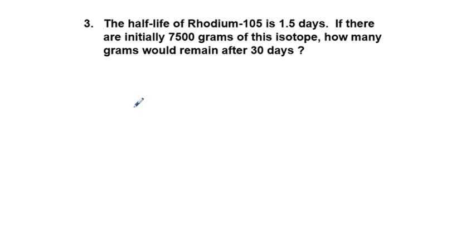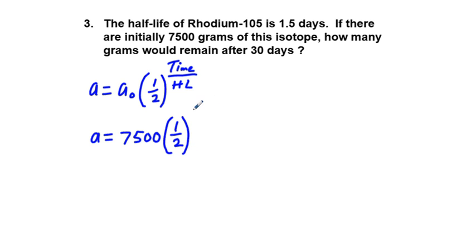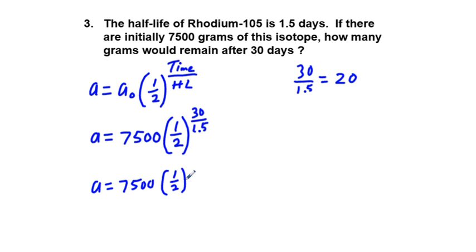Same equation. We have A equals A sub-zero times our base, one-half, to the power of time over our half-life. In this instance, we would have A is equal to our initial value, which is 7,500, times one-half, to the power of our time of 30 days over our half-life of 1.5 days. Since 30 divided by 1.5 is equal to 20, A is going to be equal to 7,500 times one-half to the power of 20. That's going to be a pretty small amount, in grams.